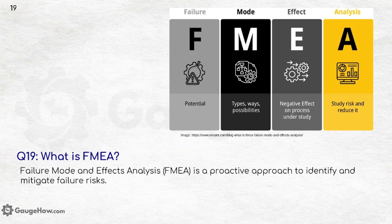What is FMEA? Failure Mode and Effects Analysis is a proactive approach to identify and mitigate failure risks. In the figure provided, F stands for potential failure, M is the mode — meaning the types, ways, or possibilities — E is the effect, meaning the negative impact on the process under study, and A is analysis, meaning the study of risks and methods to improve or reduce those risks.